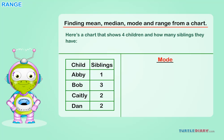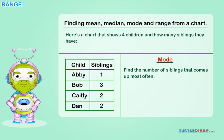Mode: find the number of siblings that comes up most often. 1, 3, 2, 2. 2 is the mode.